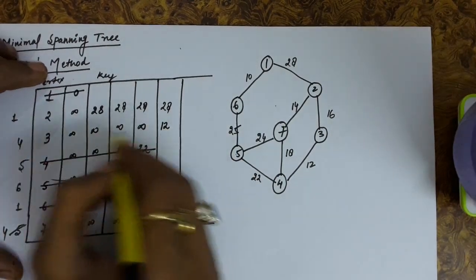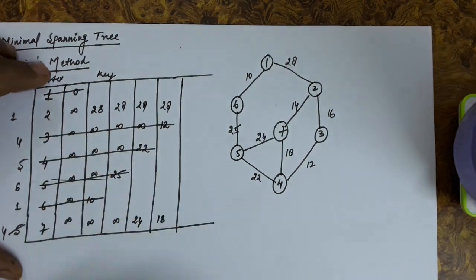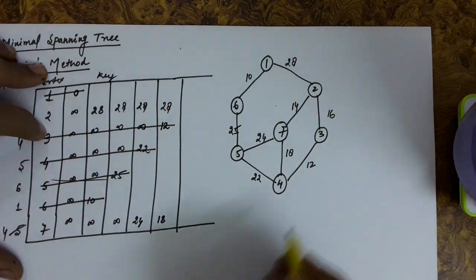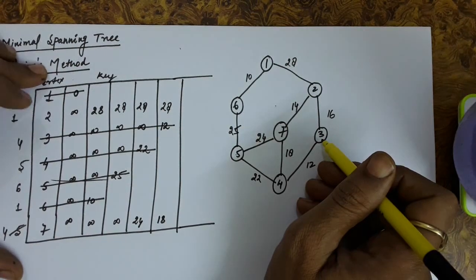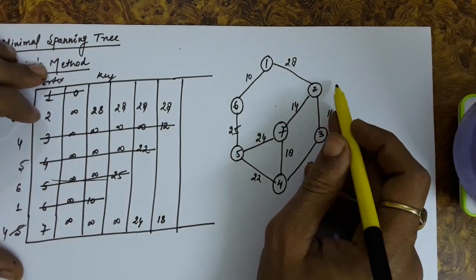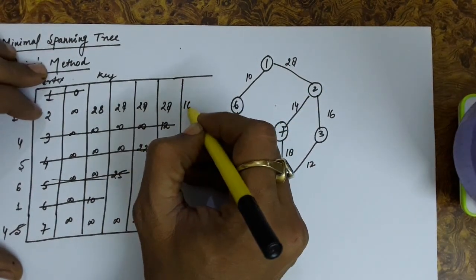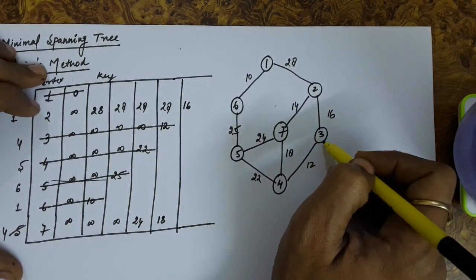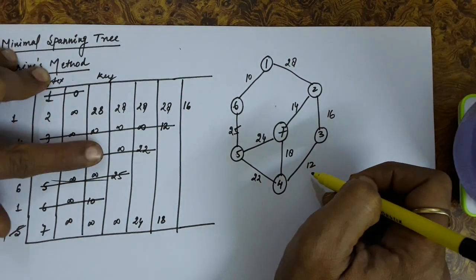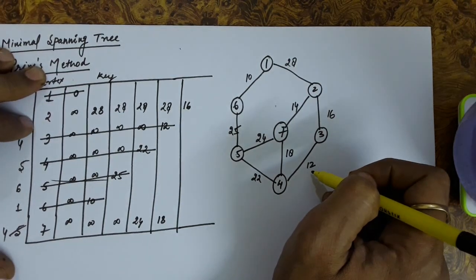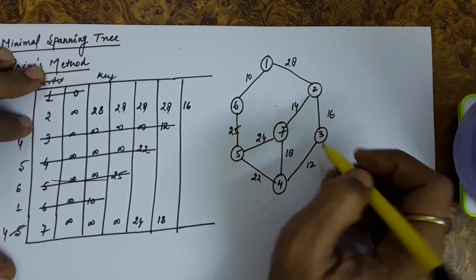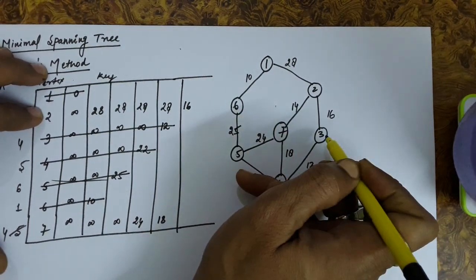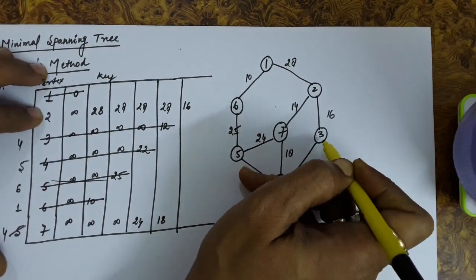Ordering the remaining 3 vertices with keys 28, 12, and 18, the smallest is 12, so we delete vertex 3. From vertex 3: edge to 2 costs 16, so we update key of 2 from 28 to 16. Edge to 4 — vertex 4 has already been deleted. The predecessor of 2 has changed; now the predecessor of 2 is 3.